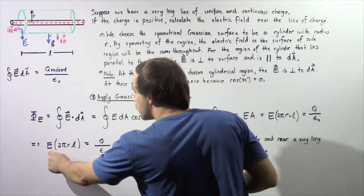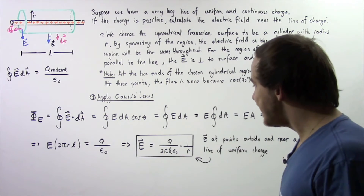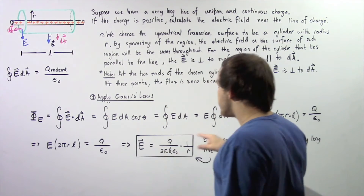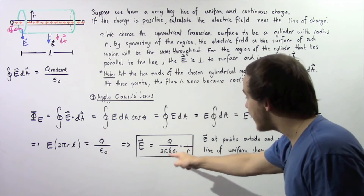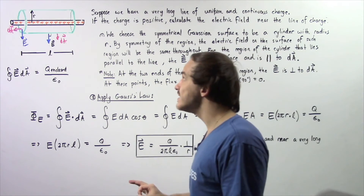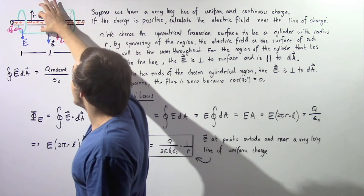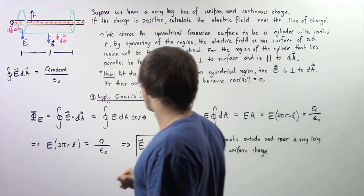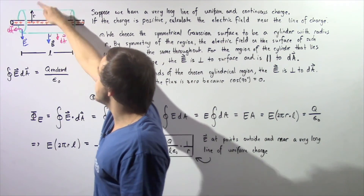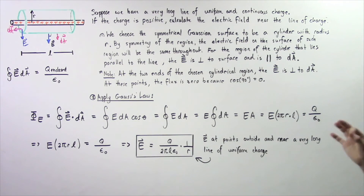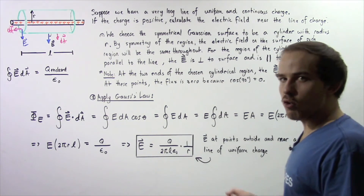Solving for E, we find that E equals Q divided by 2πL times epsilon naught, multiplied by 1 divided by R, where R is the distance between the midpoint of the electric charge and the point where we're examining our electric field — in this case, simply the radius of the chosen cylinder. This gives us the electric field at points outside and near a very long line of uniform charge.